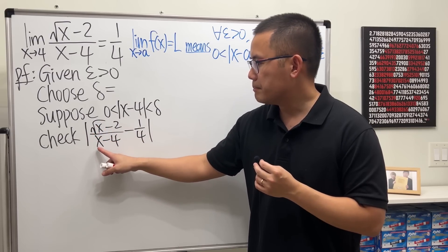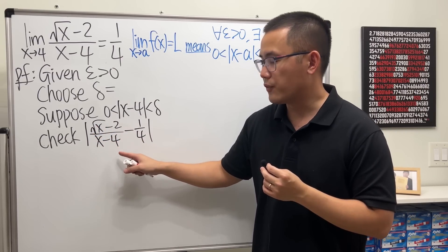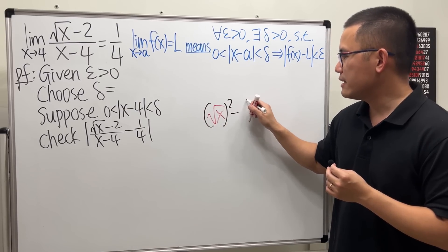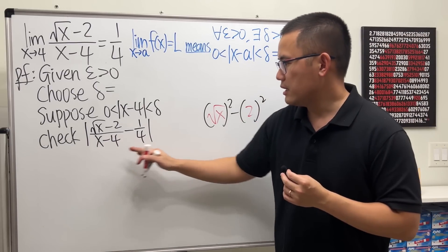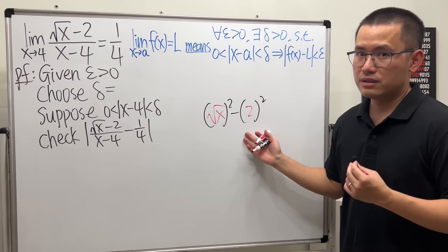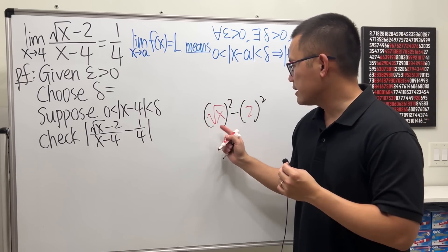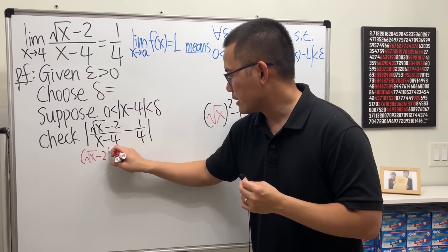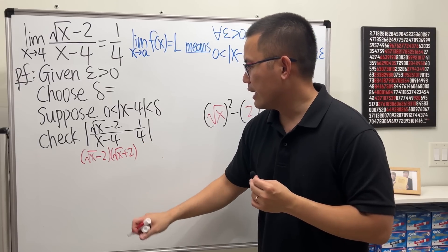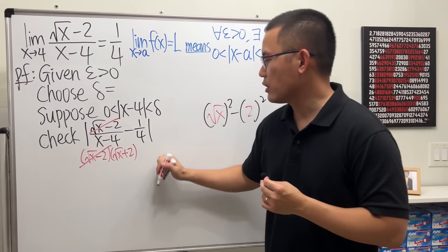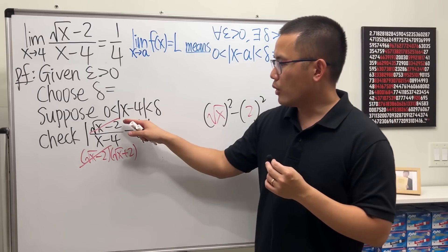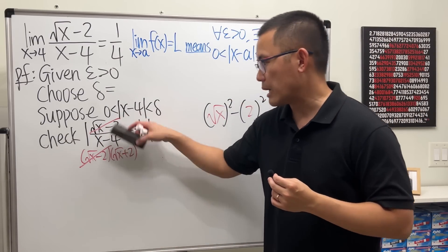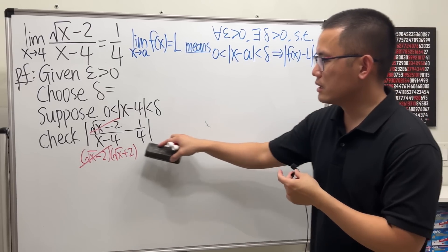We can simplify by factoring: if you look at √x − 2 as √(x² − 2²), this is a difference of two squares. We can factor it as (√x − 2)(√x + 2), and the (√x − 2) factors cancel with the numerator, which is quite nice. Alternatively, you can multiply top and bottom by the conjugate (√x + 2) and arrive at the same expression.